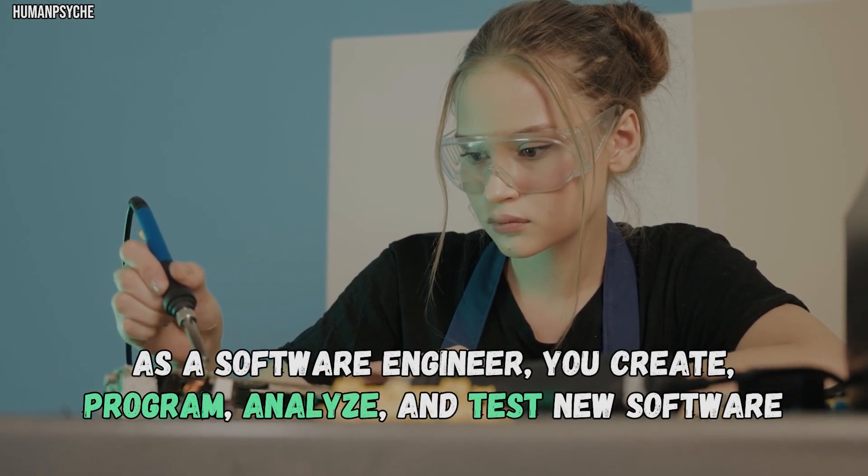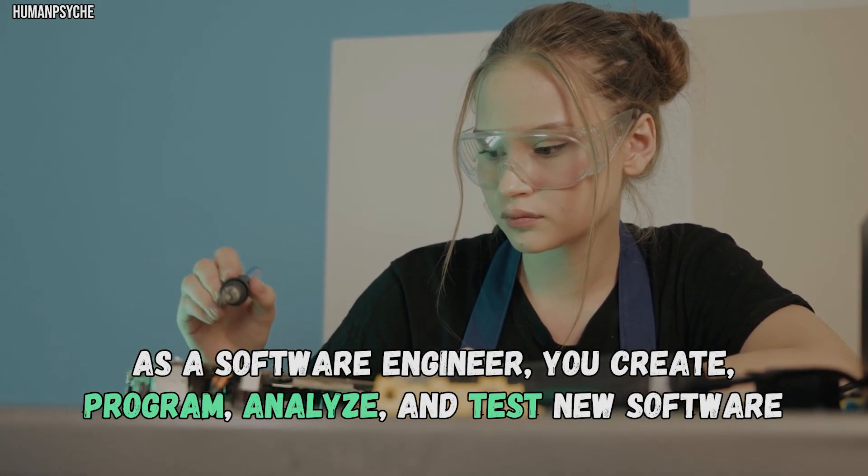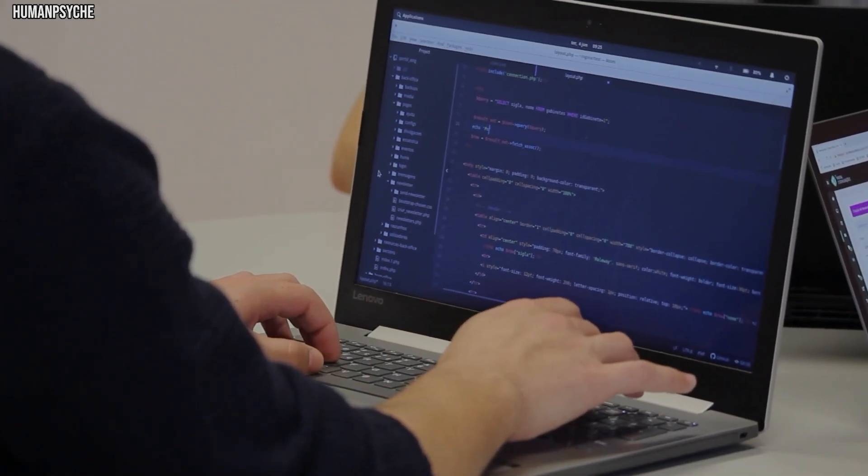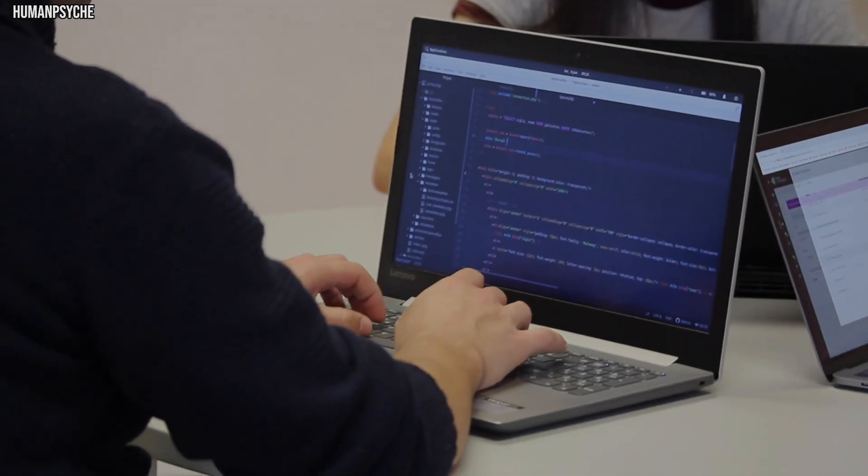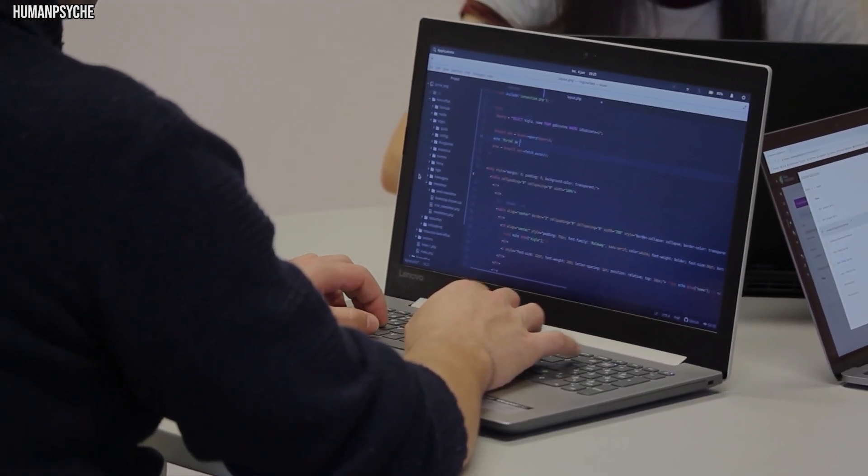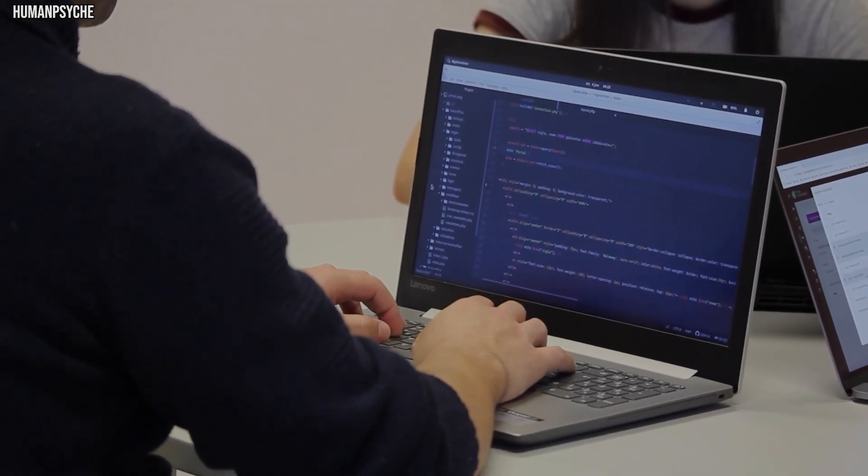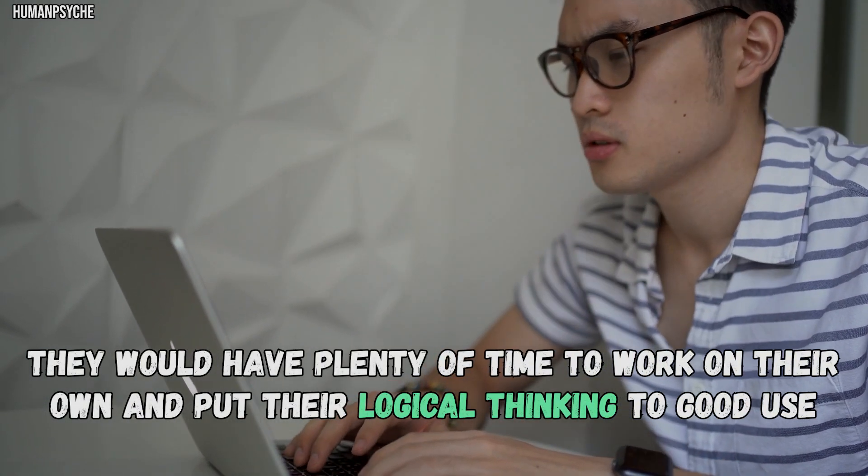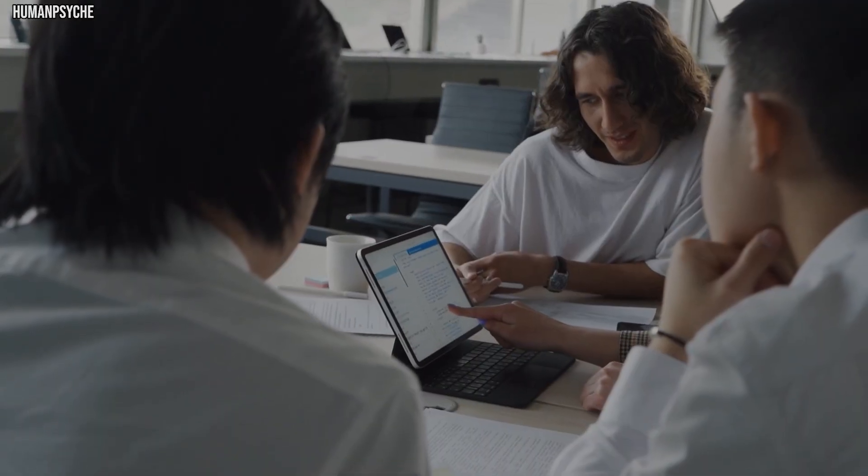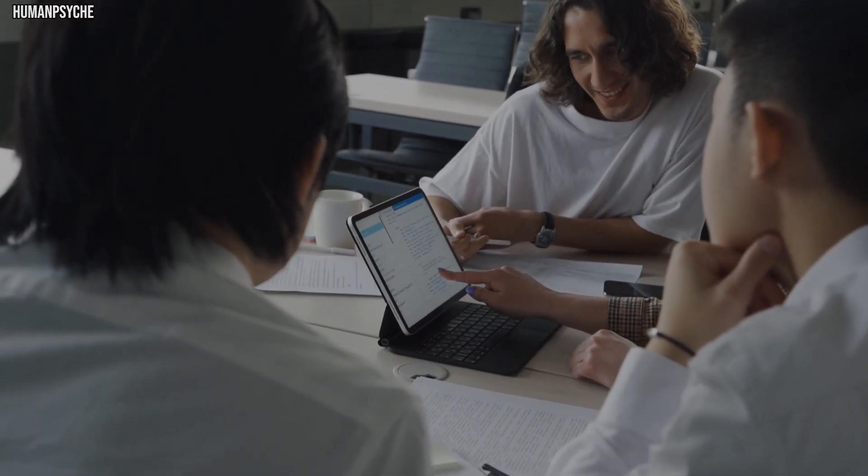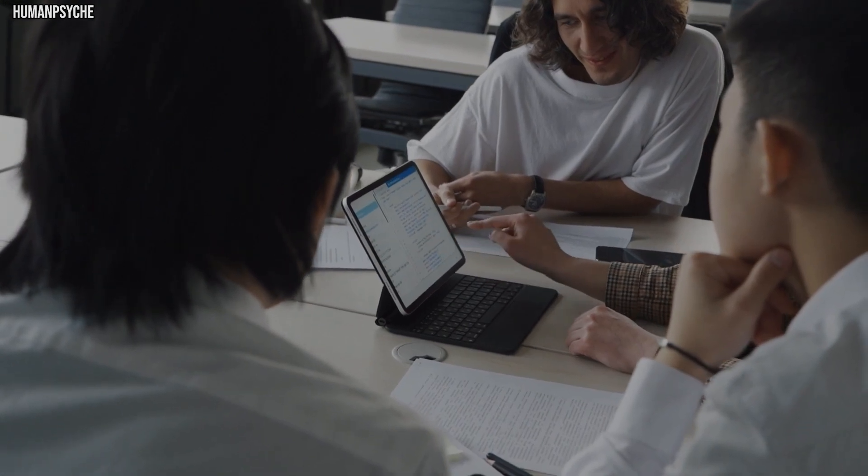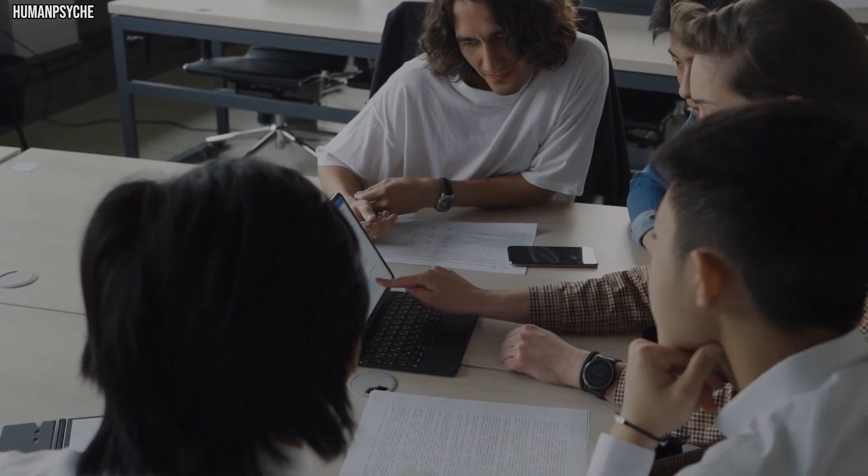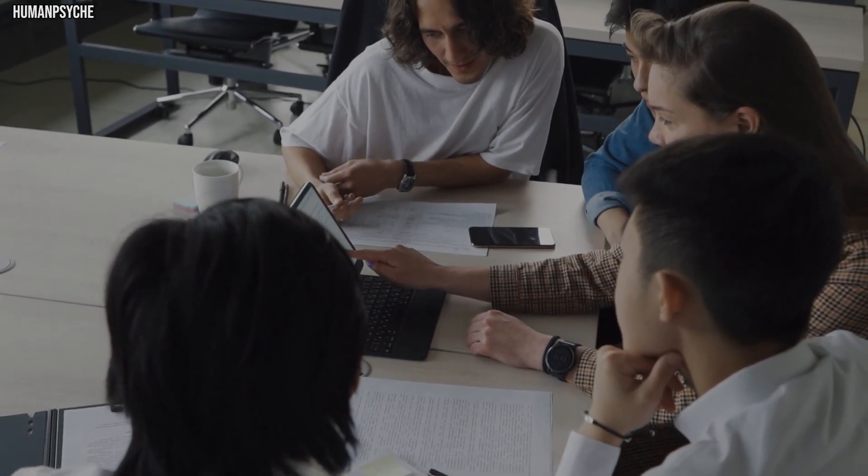As a software engineer, you create, program, analyze and test new software. INTJ's natural ability to work through tricky issues and creativity to solve problems may help them succeed as software engineers. They would have plenty of time to work on their own and put their logical thinking to good use. Though they may need to work on working comfortably with others when they need to, like designers, marketers, and more. INTJs tend to be up for the challenge and would make effective software engineers.